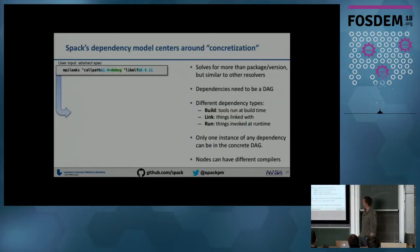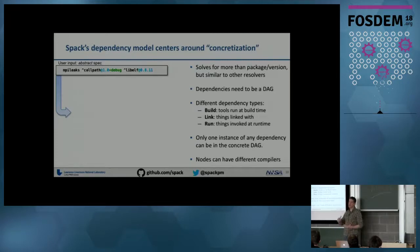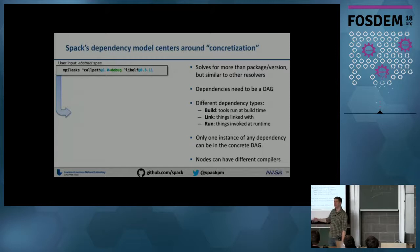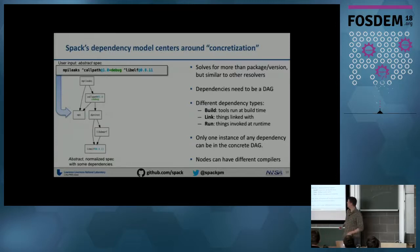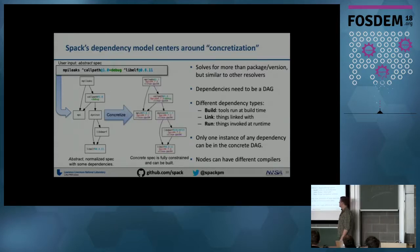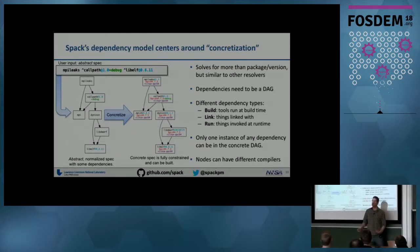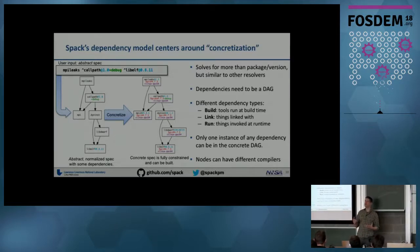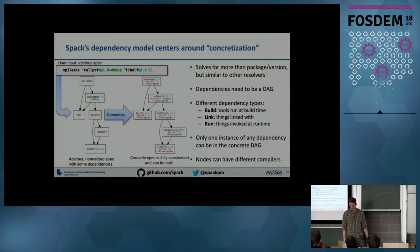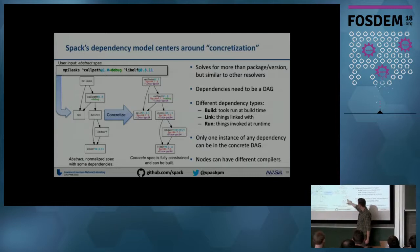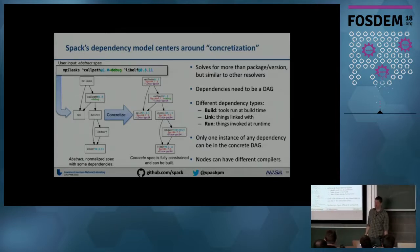The dependency model centers around something we call concretization — what most package managers call dependency resolution. Concretization is like dependency resolution except we're solving for more than just package and version. You can depend on something plus an option, or depend on something with a particular compiler. When you type a command, we build an abstract DAG with some constraints, run it through the concretizer, and its job is to fill out all the details so that by install time you have all the information and don't have to search for anything. Importantly, the nodes in the DAG can have different compilers — we currently model the compiler as an attribute on the node.